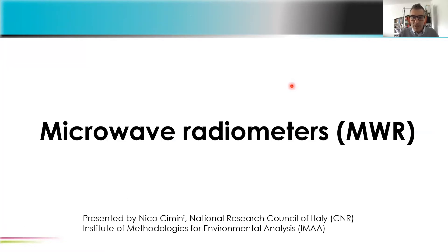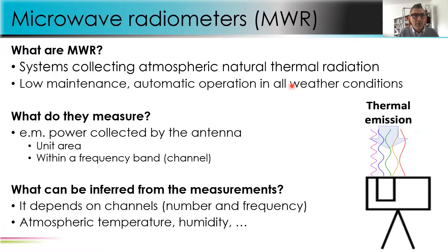Let's start with microwave radiometers. Microwave radiometers are systems collecting atmospheric natural thermal radiation. The hardware is low maintenance and provides automatic operation in all weather conditions. They measure electromagnetic power collected by the antenna per unit area and within a frequency band — those are called channels. Depending on the number of channels and frequency allocation, you can infer thermodynamics of the atmosphere: temperature, humidity, and cloud liquid.